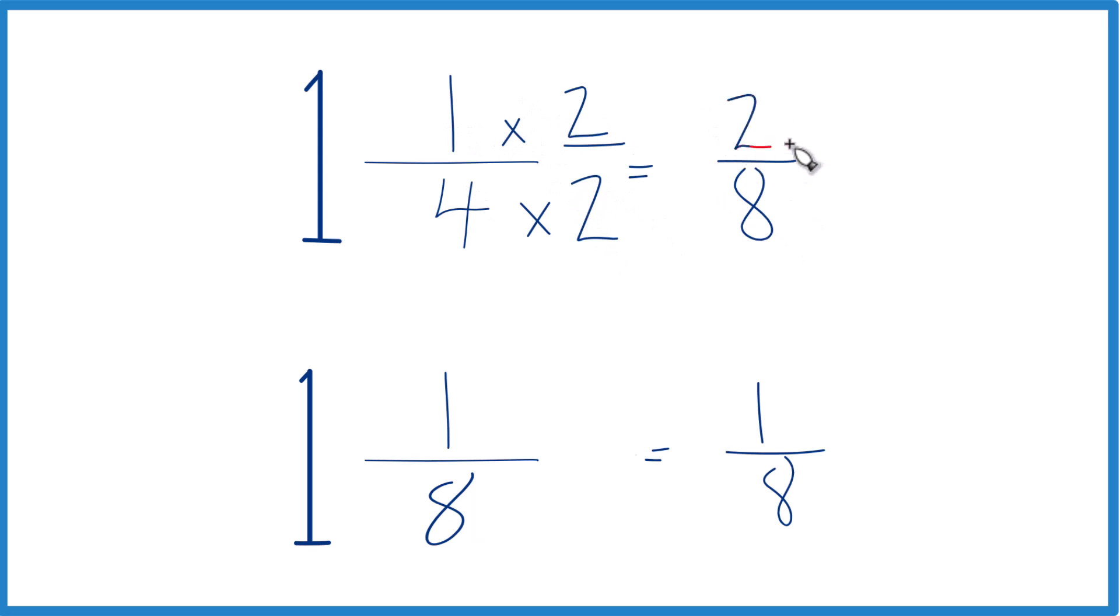1 times 2 is 2. 2/8, that's equivalent to 1/4. They have the same value. Now we have the same denominators.